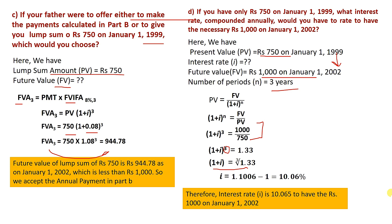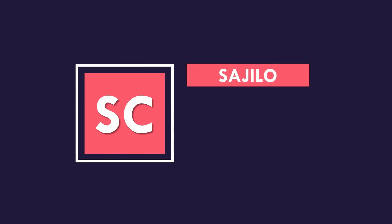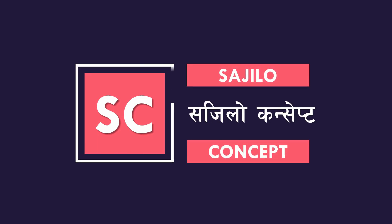Therefore the required interest rate is 10.065% to have Rs. 1,000 on January 1st, 2002 from an investment of Rs. 750 today. The final answer for the interest rate in Part D is approximately 10.025%.